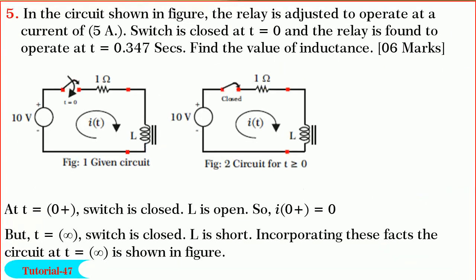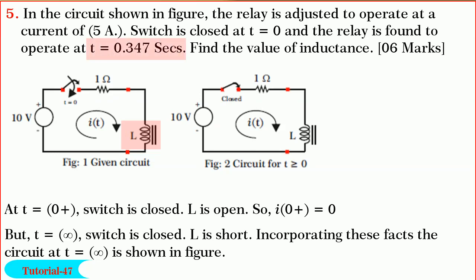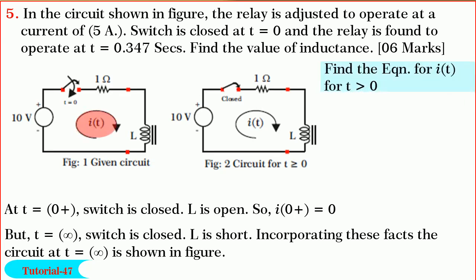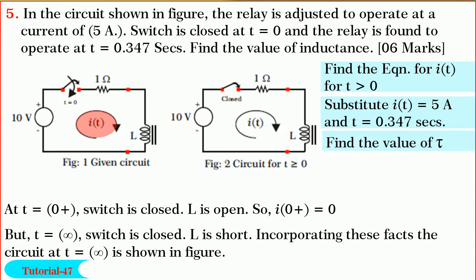Friends, finally we shall solve yet another simple problem to find the value of inductance of the relay shown in figure. It is given in the problem statement that the relay is adjusted to operate at a current of 5 amperes and the relay is found to operate at time t equal to 0.347 seconds after the switch is closed at t equal to 0. So the strategy will be to find the equation for I(t) for t greater than 0, then substitute I(t) equal to 5 amperes and t equal to 0.347 seconds and find the value of τ. Knowing τ equal to L/R, find L.